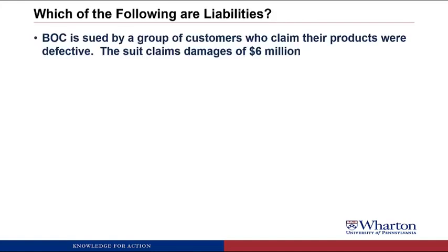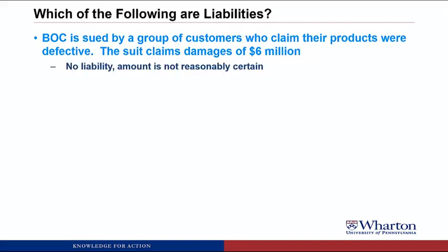Finally, BOC is sued by a group of customers who claim their products were defective. The suit claims damages of $6 million. This would not be a liability. It does meet the first criteria — there's a potential obligation based on a past benefit, since we sold products that turned out to be defective. However, it doesn't meet the second criteria because the amount of payment is still uncertain. Until we have a settlement or go to trial, we don't know whether we have to pay anything, so we don't record a liability.